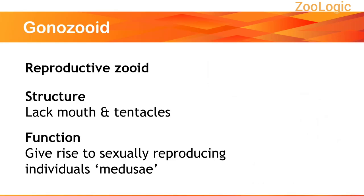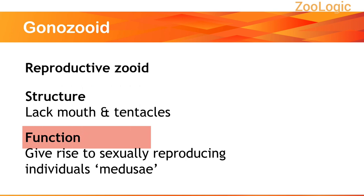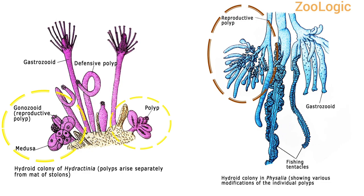The second type of individual in a hydroid colony is the Gonozoid. They are termed as reproductive zoids. They lack mouth and tentacles and are no longer involved in feeding, and this structural modification is due to their assigned function — they give rise to sexually reproducing individuals known as Medusae. These are hydroid colonies of Hypertemia and Piscelia. In both species, you can easily observe the structural modifications of Gonozoids, the highlighted parts, that are devoid of mouth and tentacles.